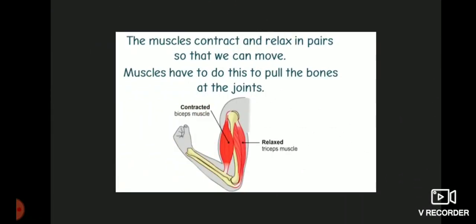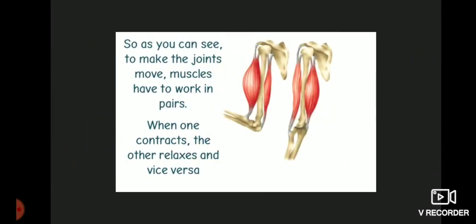The muscles contract and relax in pairs so that we can move. Muscles have to do this to pull the bones at the joints. To make the joints move, muscles have to work in pairs. When one contracts, the other relaxes and vice versa.